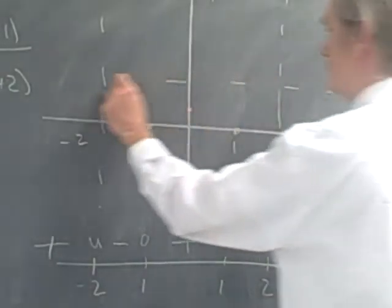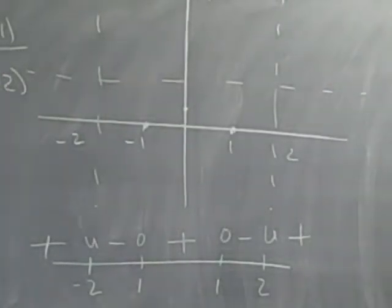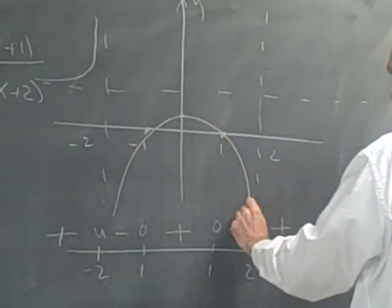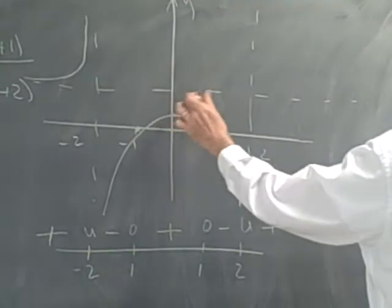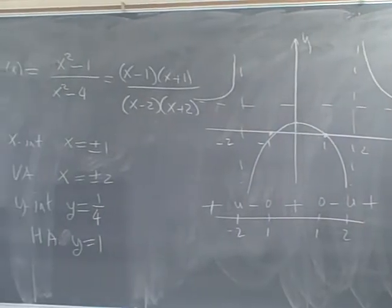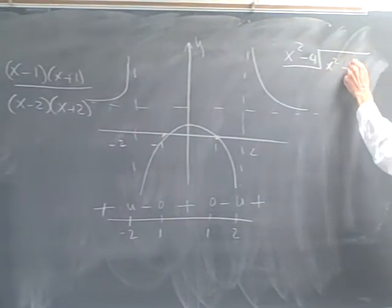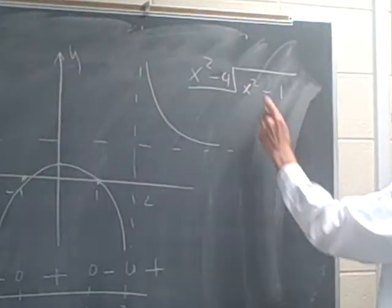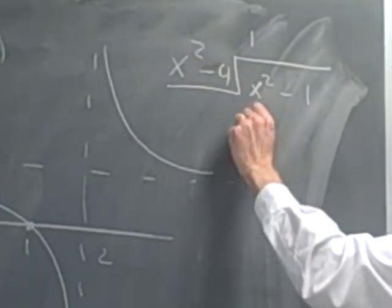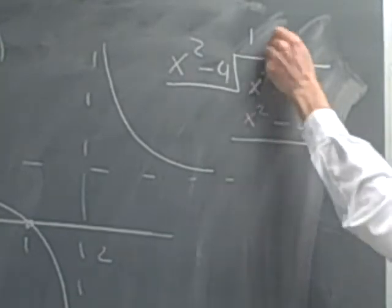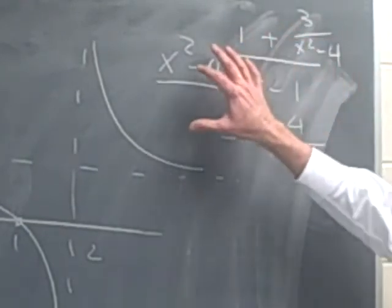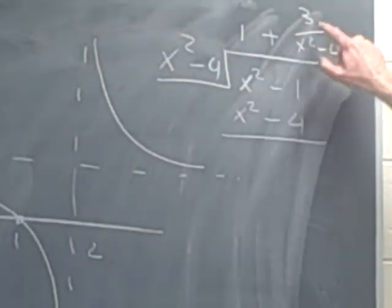And what happens? The function's positive, negative, positive, negative, and then positive. And if we did long division on this, we would find out that x squared minus 4 goes into x squared minus 1. x squared goes into x squared one time, and when we divide through, we get x squared minus 4. So we get 1 plus 3 over x squared minus 4. And so it doesn't fall into the family that we've seen so far. It actually comes from 1 over a quadratic.